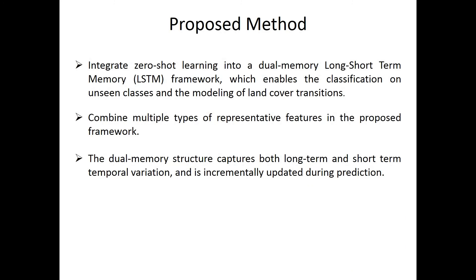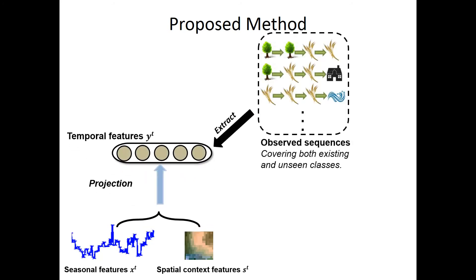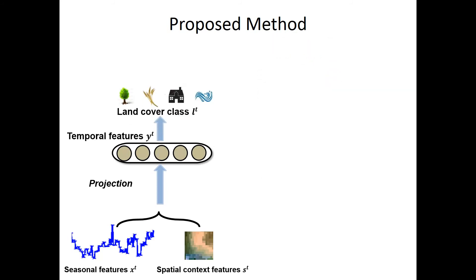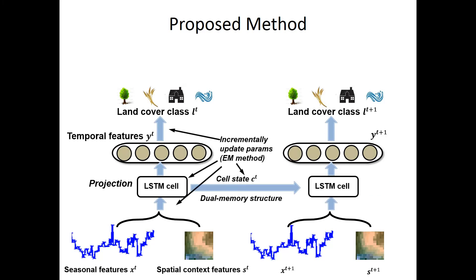We propose to integrate a zero-shot learning approach into a dual-memory LSTM framework. We first extract two sets of features — seasonal features and spatial context features — and map them into a space of temporal features, which are extracted from a set of observed land cover sequences. From temporal features, we can determine the land cover class output. We then integrate this zero-shot learning approach into an LSTM framework, incrementally update the model parameters, and use the updated parameters to do the prediction at the next time step, repeating this process in an EM-style method.